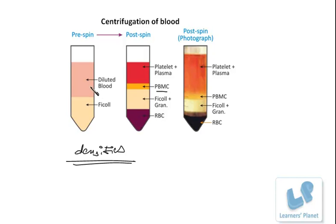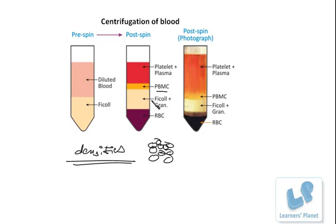The diluted blood with anticoagulant chemical is placed in the Eppendorf centrifuge — typically at diagnostic centers. When rotated at very high speed, RBCs combine and settle down, then granules, then blood cells, then platelets and plasma form different layers depending upon their densities. In this way, the constituents of blood can be separated.